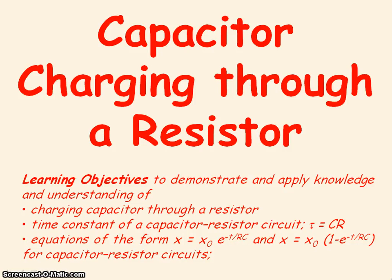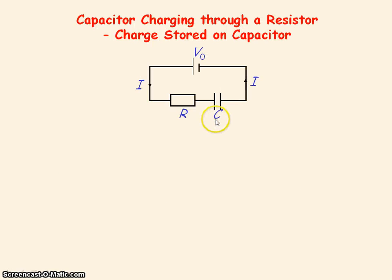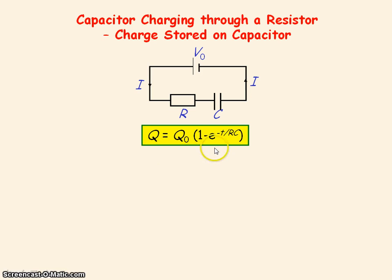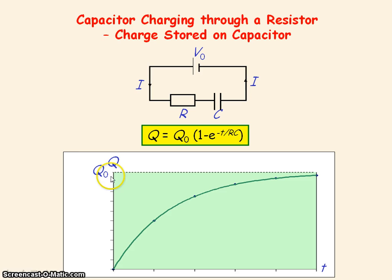We're going to be looking at a capacitor charging through a resistor. We have an uncharged capacitor and a resistor connected to a voltage supply, and the charge stored on the capacitor increases according to this equation. This is the graph of the charge stored on the capacitor with time t while it's charging, and it will reach a final charge of Q₀ when the capacitor is fully charged.